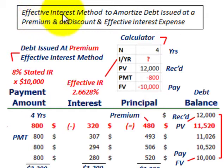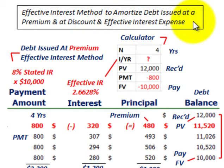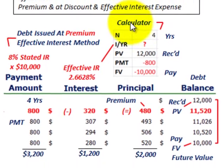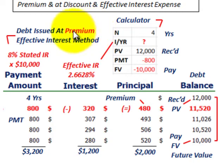We're going to be looking at the effective interest method to amortize debt issued at both a premium and at a discount. What we have to calculate is the effective interest expense on this debt, and we're going to be looking at it in terms of a loan that's taken out and has to be paid back. First, we'll look at debt issued at a premium.